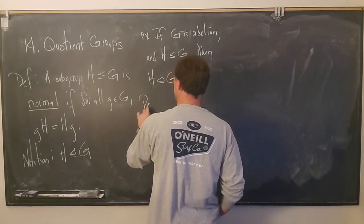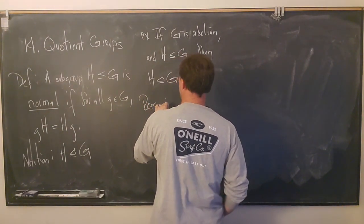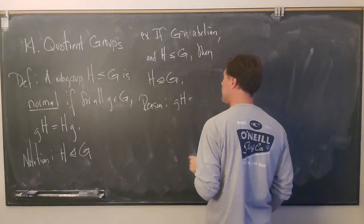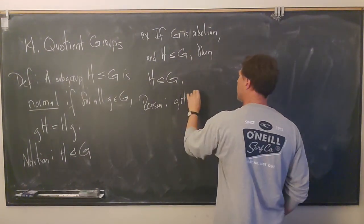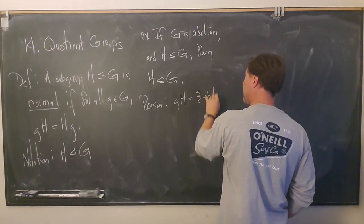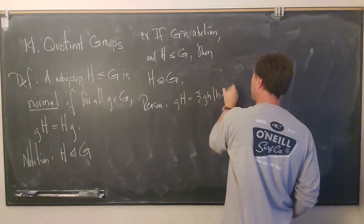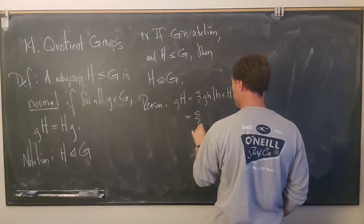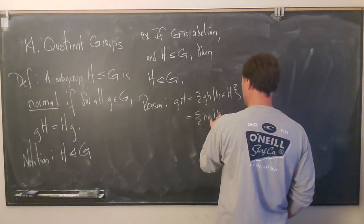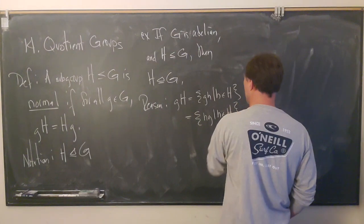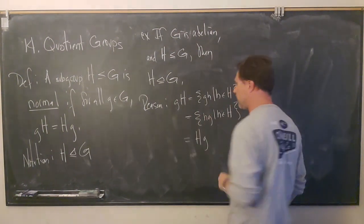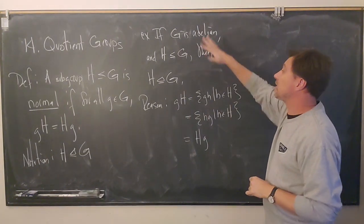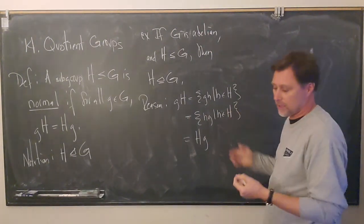Why is that? We can just crank it out. gH is equal to the set of all things of the form gh, where h runs through all of H. Because the group is abelian, we can turn this around and write this as hg, where h runs through all of H — and then this is H times g. So in the abelian setting, you kind of just get this for free.